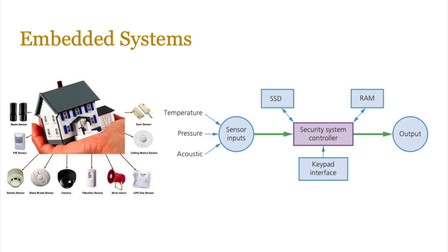In the case of a smart house, there could be a number of different systems with embedded systems inside them. The one on screen is a security system, which will have sensor inputs like temperature, pressure, sound, or acoustic. It will have an SSD and RAM to store and operate and record things, a keyboard or keypad interface, and some kind of output — which could be an alarm, an alert, or a notification sent to your device.